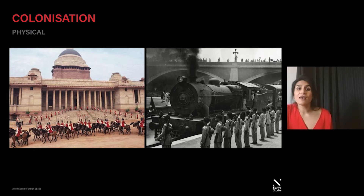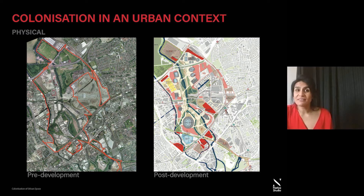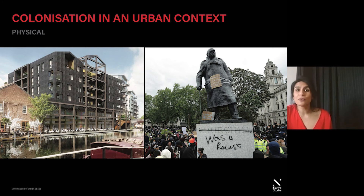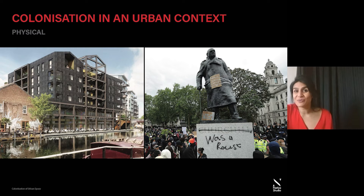In the urban context of London, we can look at these red line boundaries — familiar from development plots — where developers dictate, creating boundaries and divisions through materials and ownership, isolating them from the wider context and colonising a specific area. Here you can see the Olympic Park before and after development: previously the boundaries were less defined, but afterwards there is clearly a different approach, different materiality, different form. The presence of physical buildings, including statues of figures with negative connotations around race or empire, as well as the architectural language of buildings that embody slavery — for example warehouse typologies in Hackney Wick sitting on old sugar factories — continue to be manifestations of this colonialist legacy.